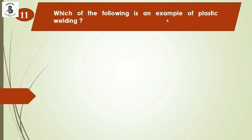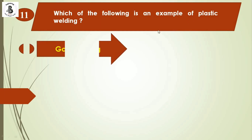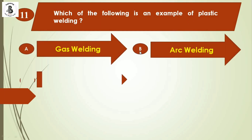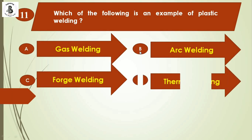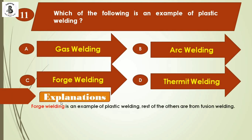Question 11: Which of the following is an example of plastic welding? Option A: gas welding, option B: arc welding, option C: forge welding, option D: thermite welding. Forge welding is an example of plastic welding. Gas welding, arc welding, and thermite welding are all categories of fusion welding. The right answer is option C: forge welding.